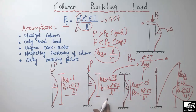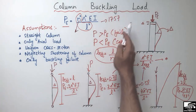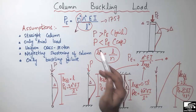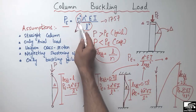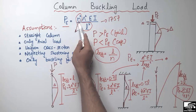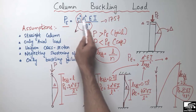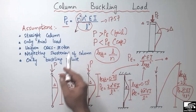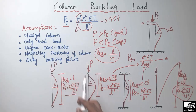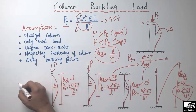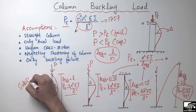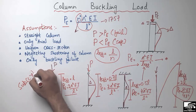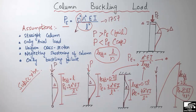This video covers column buckling load. The four main factors affecting the buckling load are N (support condition), E (modulus of elasticity), I (moment of inertia), and L (length). Hope you understood — don't forget to subscribe to our channel. Thank you for watching.